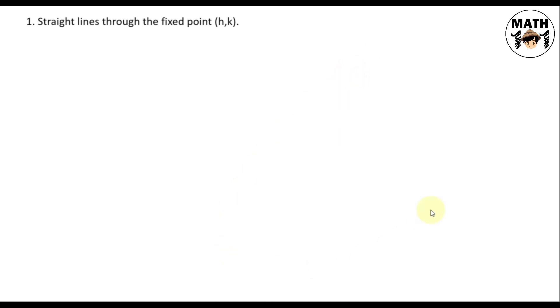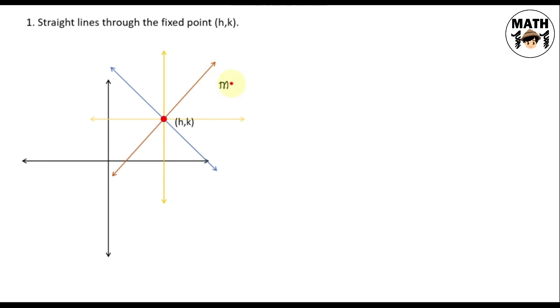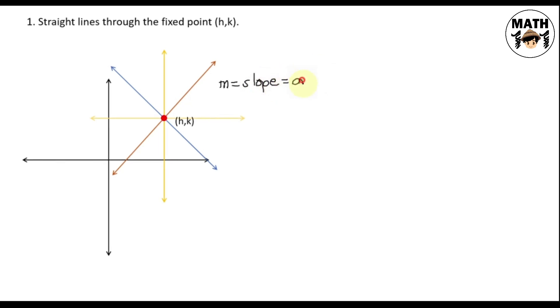Problem number one: let us define the family of curves of all the straight lines passing through the fixed point h,k. Let's draw representative lines for this problem. Let's say this is the fixed point h,k and some lines are passing through this point. Notice that what changes among these lines is the slope, or that is m. Since the slope is changing, it is our arbitrary constant.